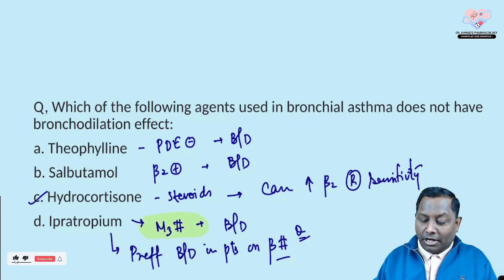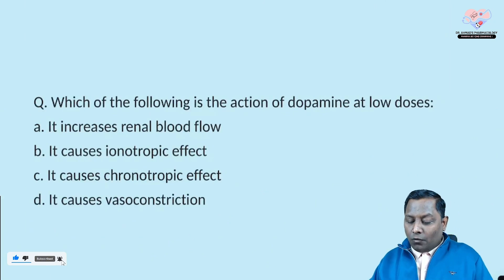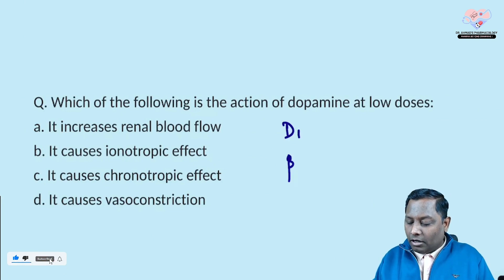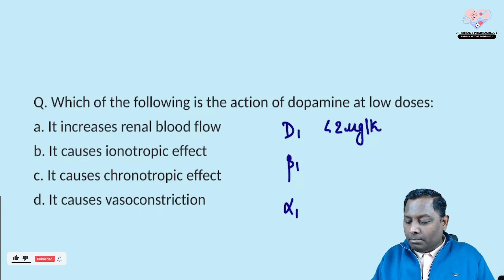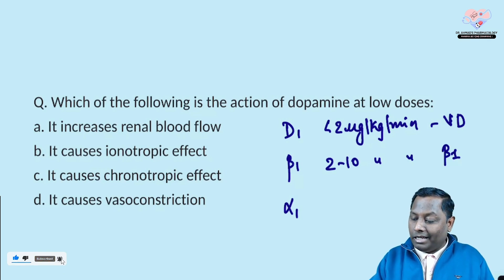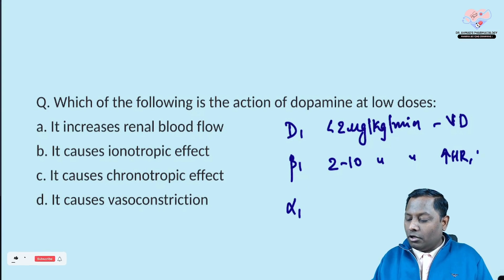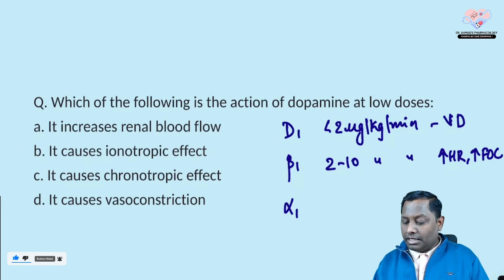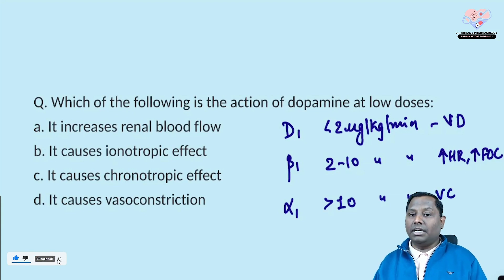Next: which of the following is the action of dopamine at low doses? Dopamine acts on receptors — remember the mnemonic 'morning dabba dabba': D1 at less than 2 mcg/kg/min causes vasodilatation; beta-1 at 2–10 mcg/kg/min causes beta-1 stimulation, increasing heart rate and force of contraction, useful in acute heart failure; alpha-1 at more than 10 mcg/kg/min causes vasoconstriction and increases blood pressure.